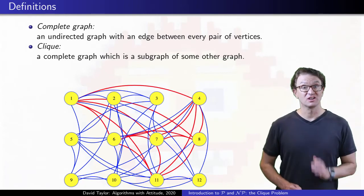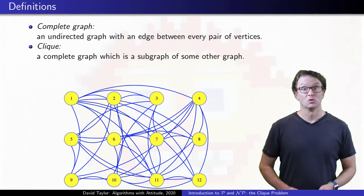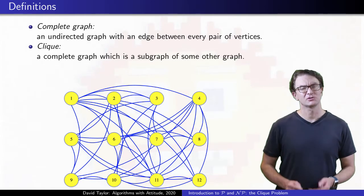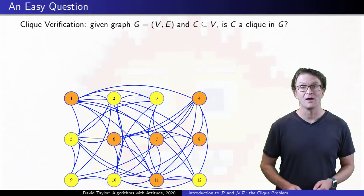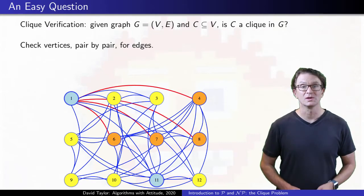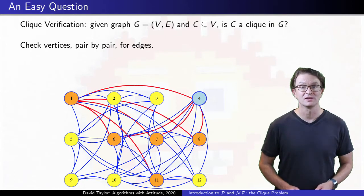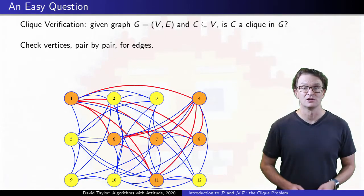When our size 6 clique is hidden within a larger graph, it is harder to spot, but if somebody tells you that some set of vertices in the graph is a clique, it is easy to verify. You can go through each pair of vertices in the set to check that there is an edge between them.